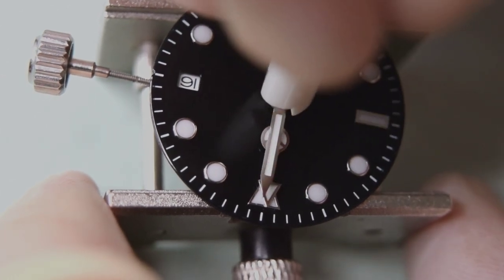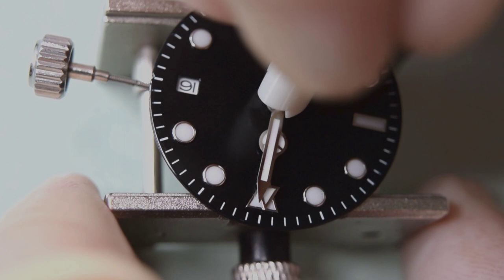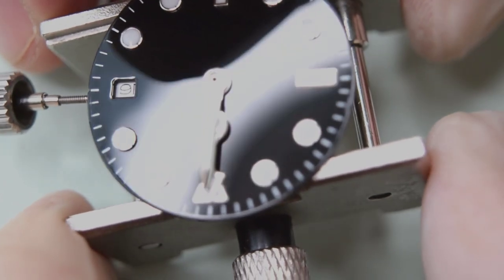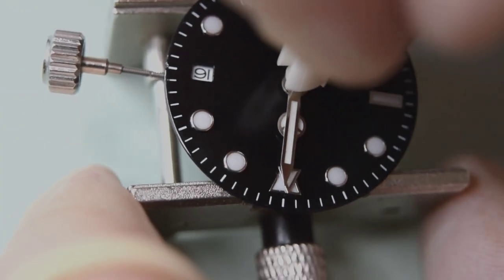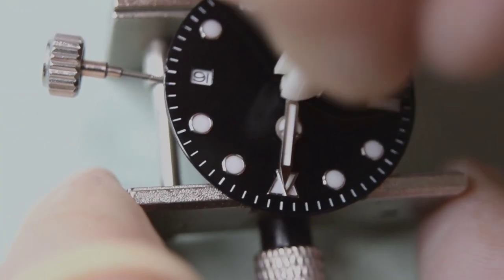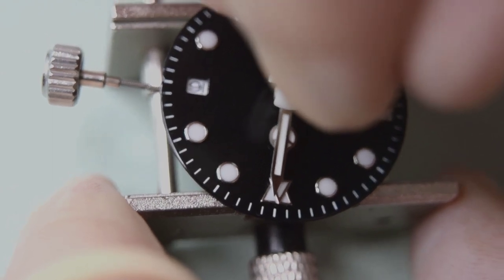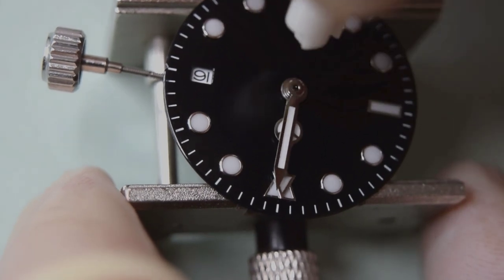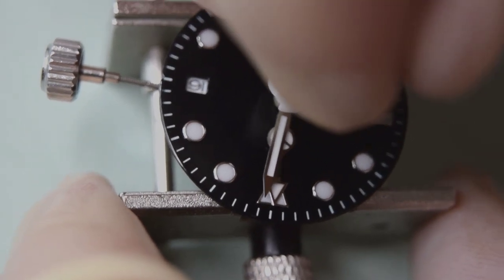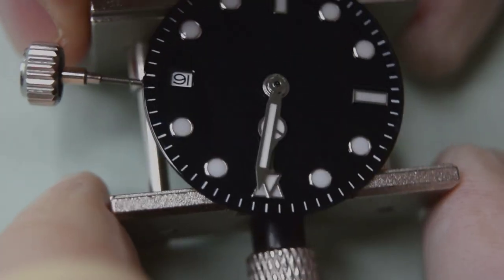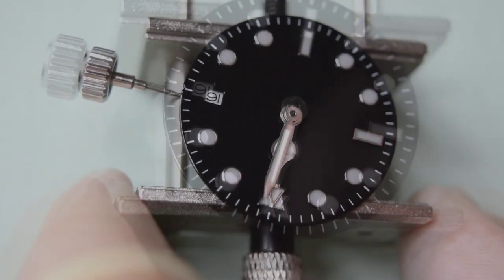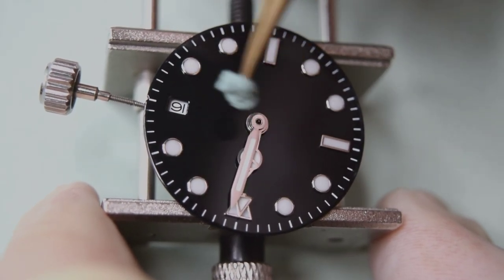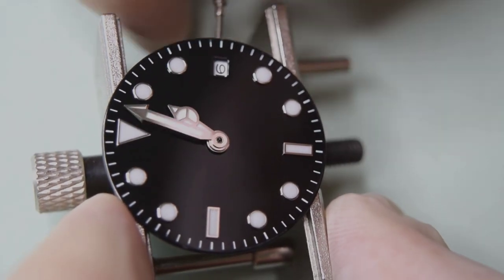Okay, the minute hand is okay. One thing that we have to pay attention is that these hands don't hug to each other, because the watch wouldn't work. Okay, let's clean it with rodico. Some dust. And now let's check if everything is working like it should.